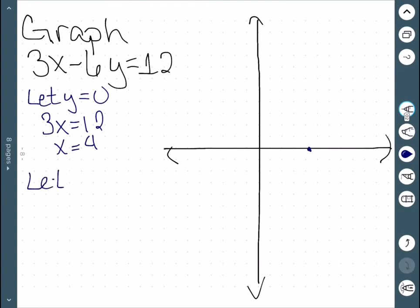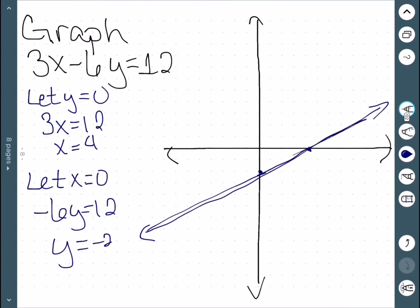If I let x = 0, I get -6y = 12, so y = -2. This is now my y-intercept. I can then connect the dots between these two points to get my line.